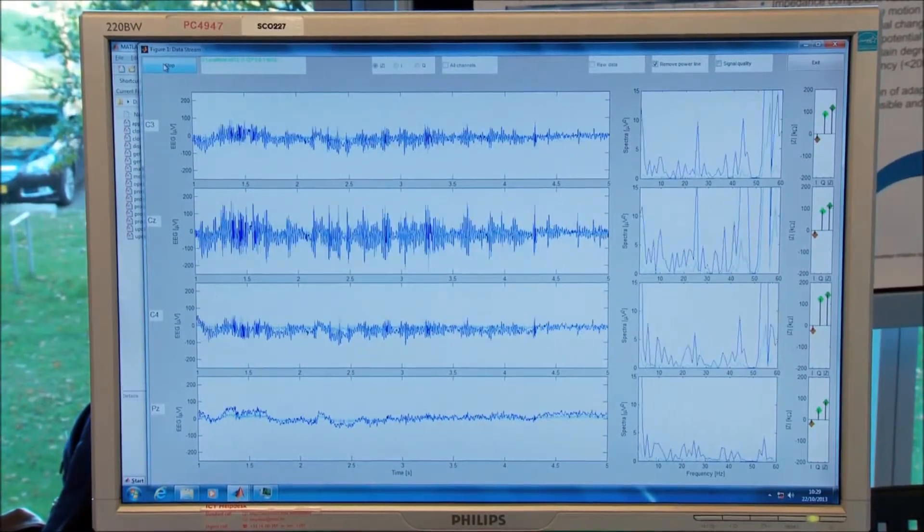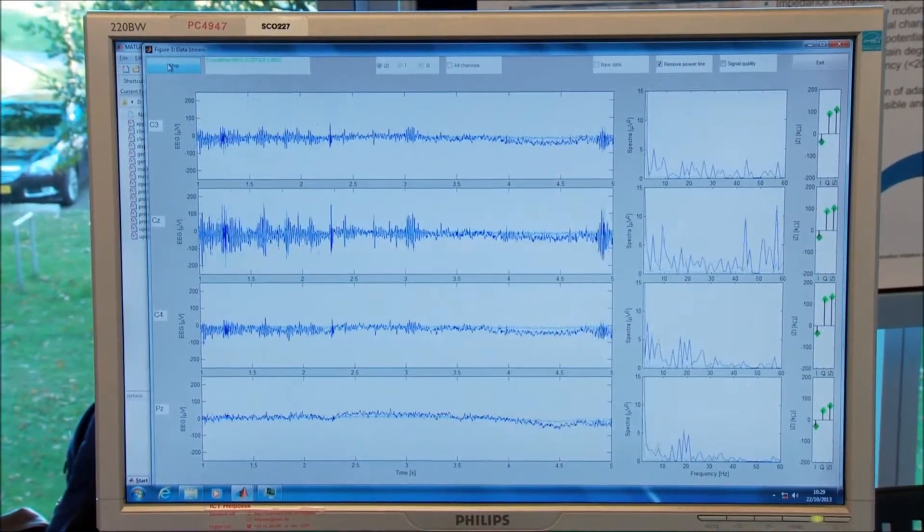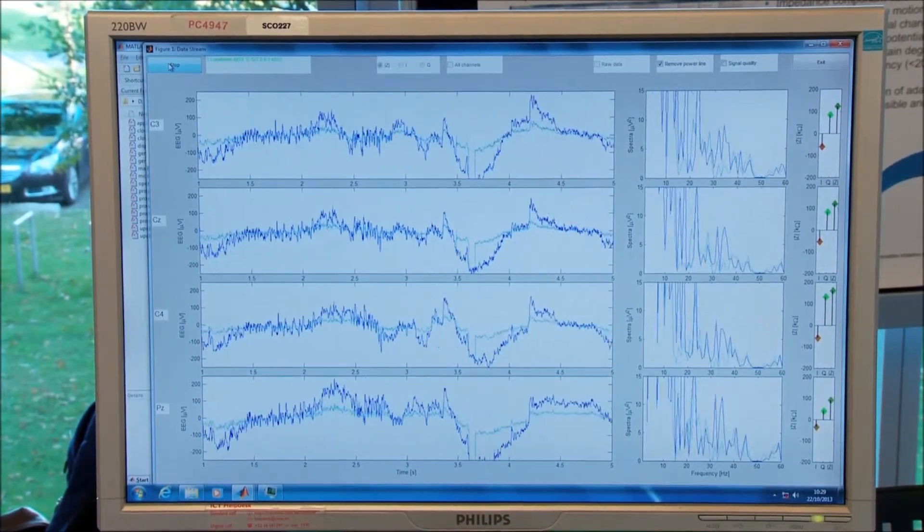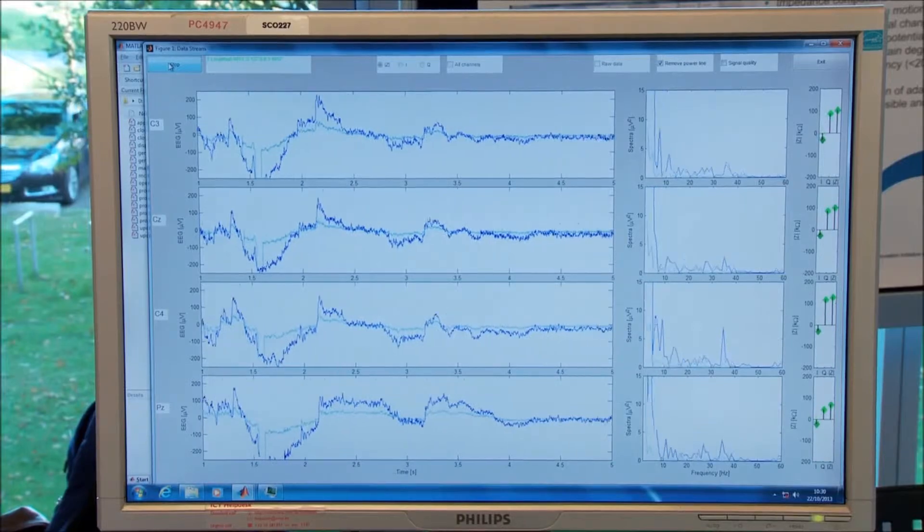So the dark blue signal is representing the original signal that's coming from the electrodes. And the light blue signal is the signal with reduced motion artifacts. So we are using adaptive filtering for that.